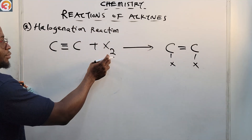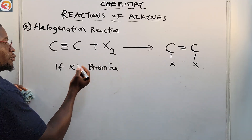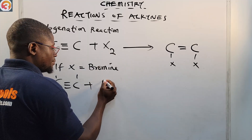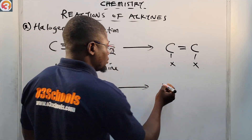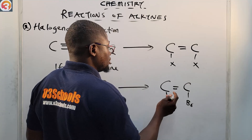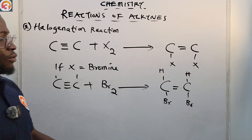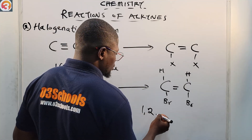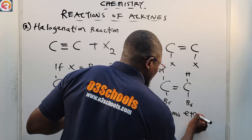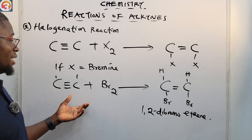For example, if the halogen is bromine (Br₂), then ethyne C≡C plus Br₂ gives us a product where one pi bond is broken and we have C=C with one bromine on each carbon. Completing the structure gives us 1,2-dibromoethene.